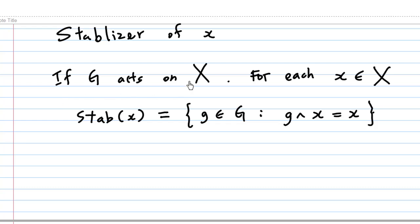If G acts on the set X, then for each element X, the stabilizer of X is the collection of all elements g of G such that g acting on X is equal to X. Note that different X have different stabilizers.